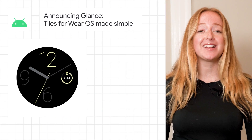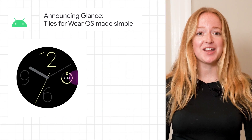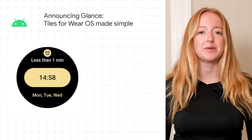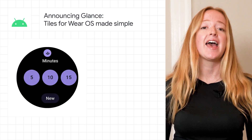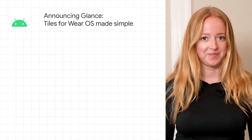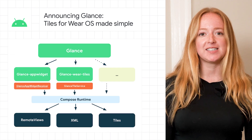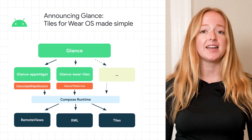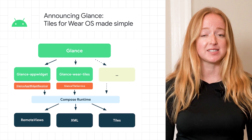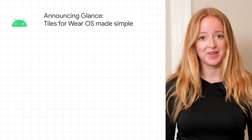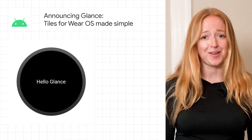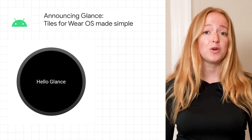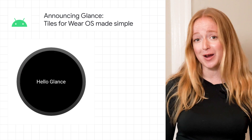To start off, this week we announced Glance, a new framework built on top of Jetpack Compose designed to make it easier to build for surfaces outside your app on Android. The alpha version introduces the main APIs to build wear tiles, including an initial set of Glance Composables, and more. Alpha releases are all about feedback, so make sure to check out the full announcement and submit your feedback to influence the future of wearables.